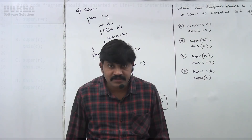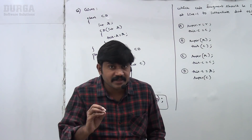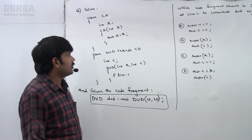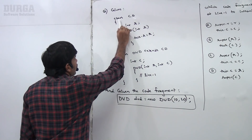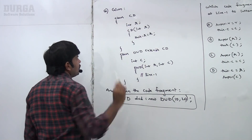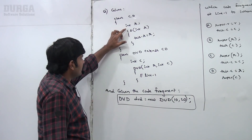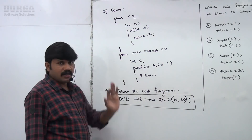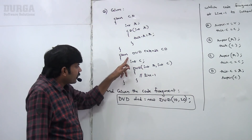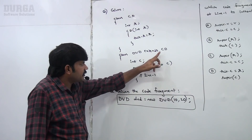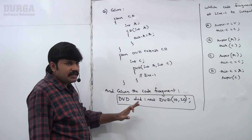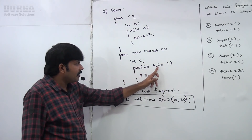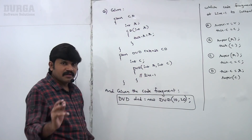Hello friends. The next equation related to constructors concept — just observe. Given class CD with int R, and constructor CD(int R) where this.R = R. Class DVD extends CD with int C, and constructor DVD(int R, int C) — line 1.